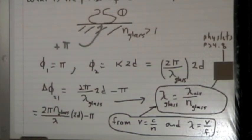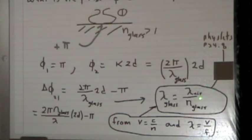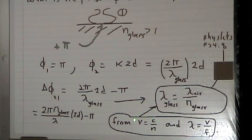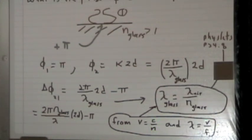Putting it together, the difference in phase between wave two and wave one is (2π/λ_glass × 2d) minus π. The wavelength of light inside the glass is related to the wavelength outside by λ_glass = λ/N, where N is the index of refraction. This comes from the fact that the velocity inside the glass is v = c/N, and since λ = v/f, the wavelength gets shortened inside the glass.